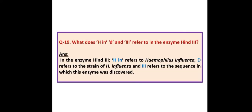What do H, IN, D and 3 refer to in the enzyme HindIII? Answer: In the enzyme HindIII, HIN refers to Haemophilus influenzae, D refers to the strain of Haemophilus influenzae, and the Roman numeral III refers to the sequence in which this enzyme was discovered.